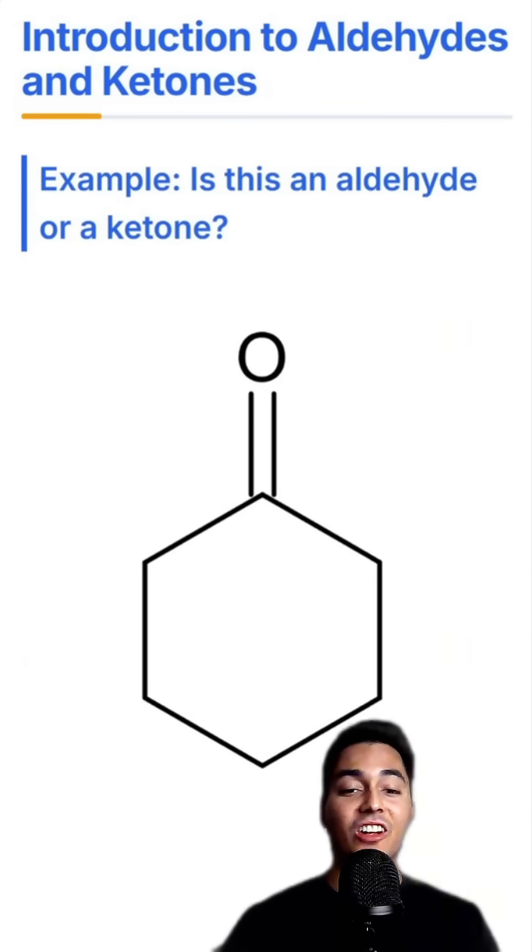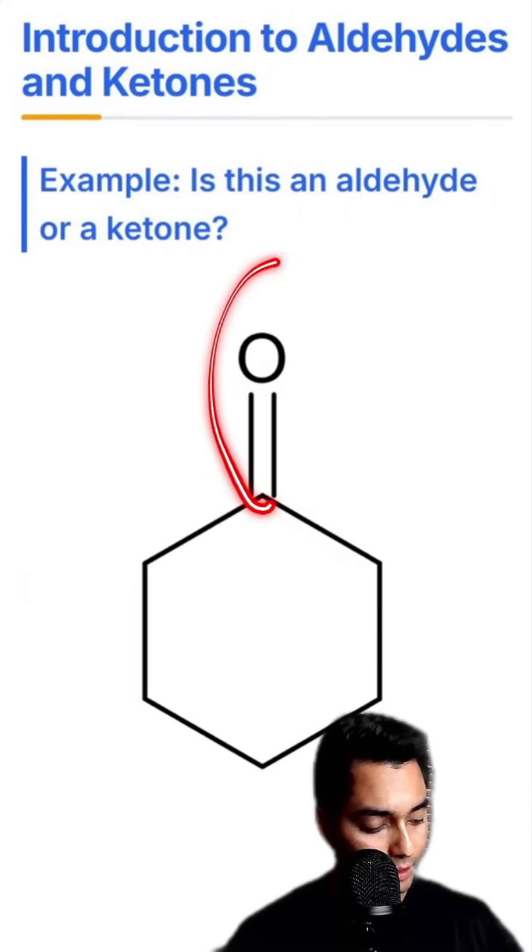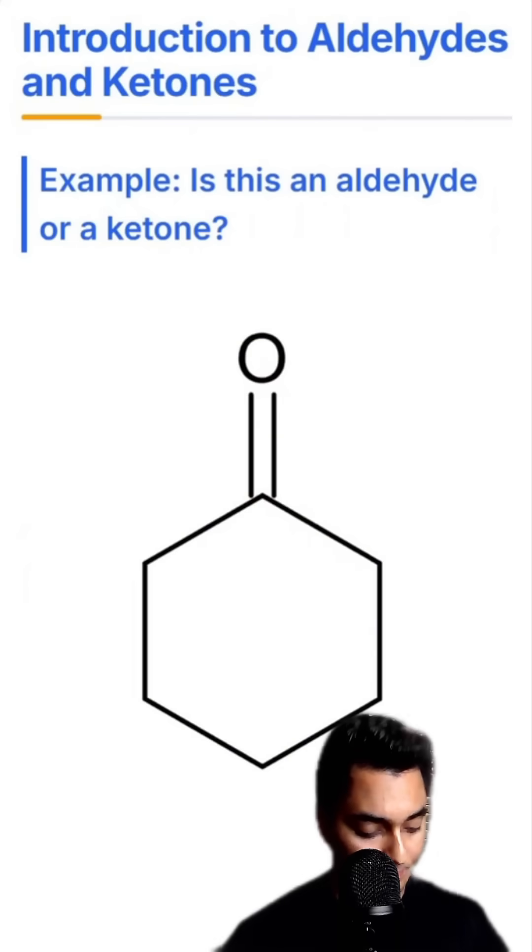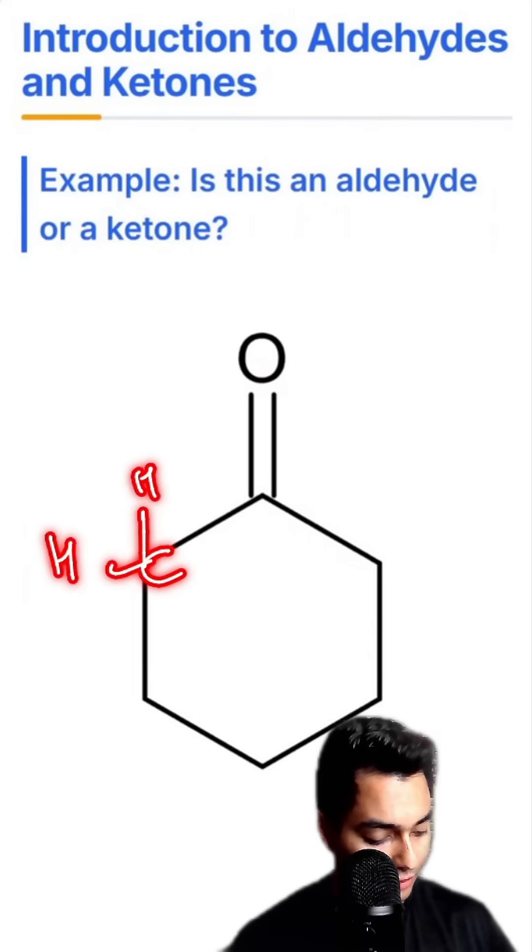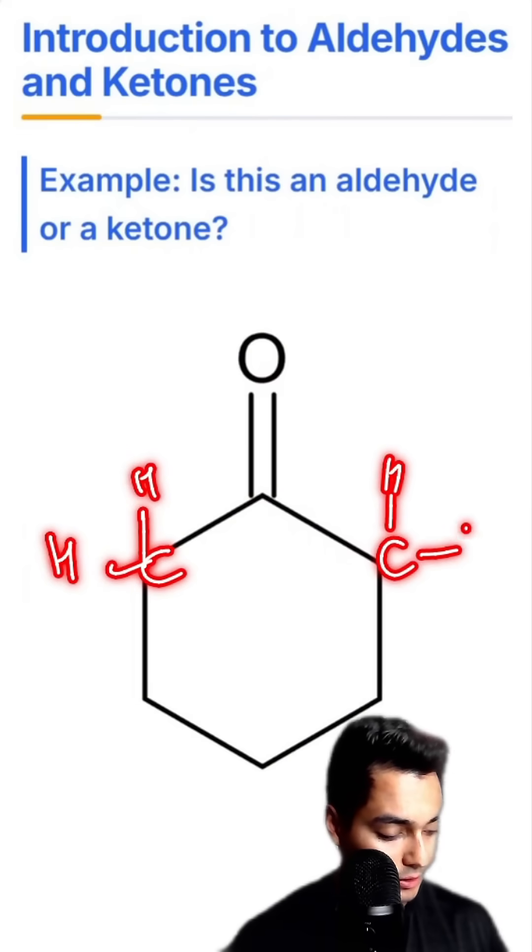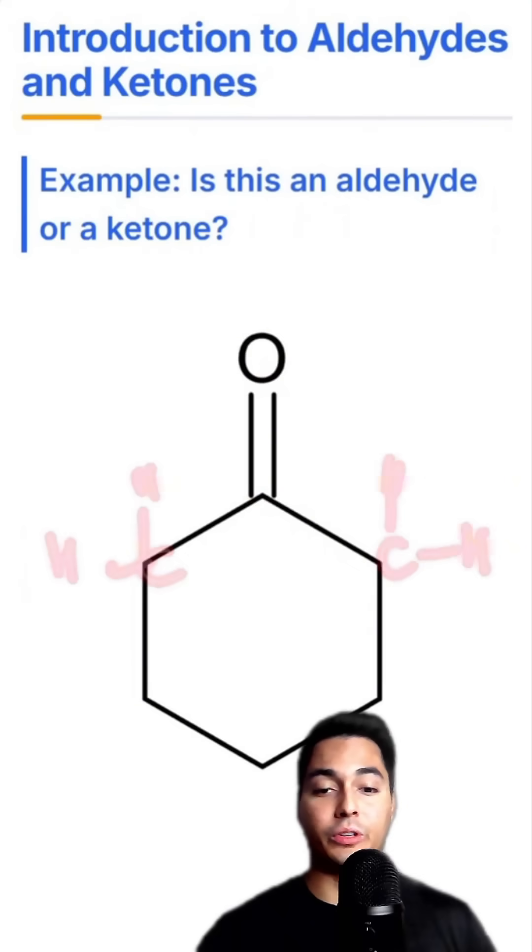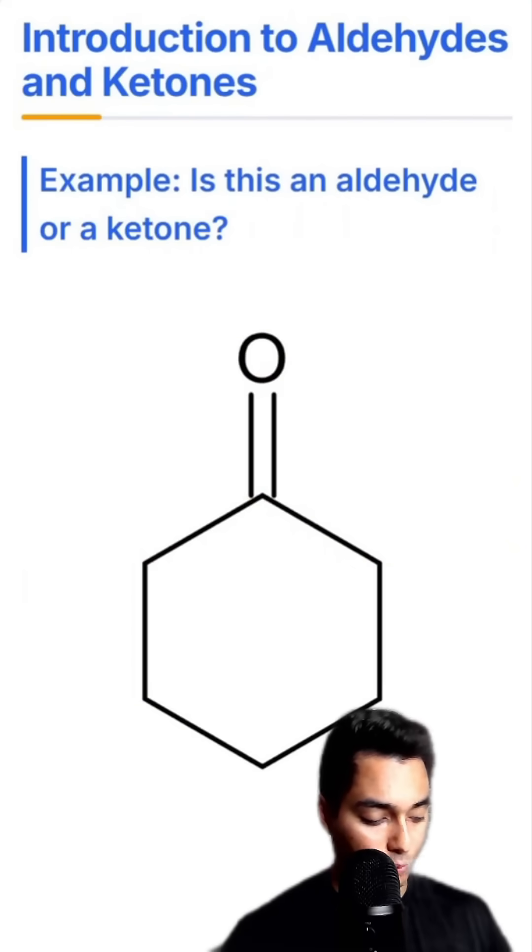What about this compound right here? Is this an aldehyde or a ketone? Notice we do have the carbonyl group right over here. Over here we have two H's, but this is a carbon atom and this is another carbon atom bonded to two H's. Therefore this has two R groups and no H's directly adjacent to the carbonyl. So this is a ketone.